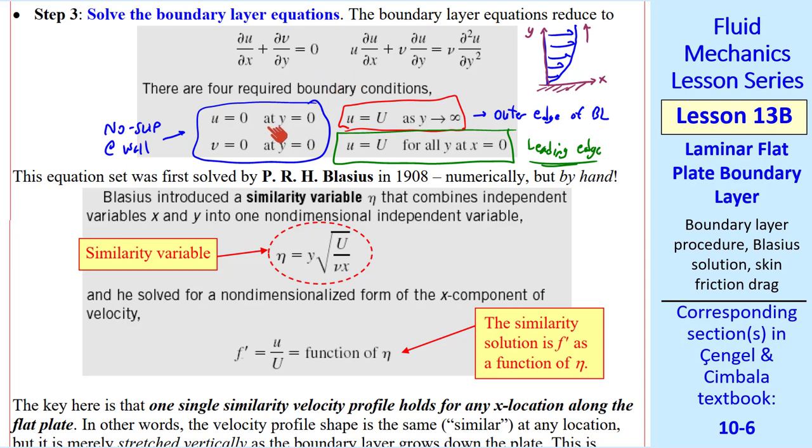This set of equations and boundary conditions look simple enough, but you actually cannot find an analytical solution. It was first solved by Blasius back in 1908. He didn't have a computer, but he did it numerically by hand. I won't go into the details of the solution. It involves assigning a similarity variable eta, which I show here, and solving for a non-dimensionalized form of the X component of velocity, F prime equal U over capital U.